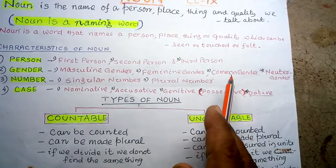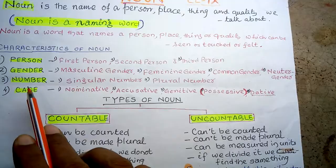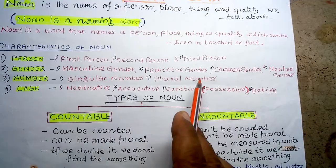The last gender type is neuter gender — for example, table, home. These are objects where no gender can be determined. The third characteristic is number. Number is of two types: singular number and plural number. Singular refers to one, and plural means more than one.